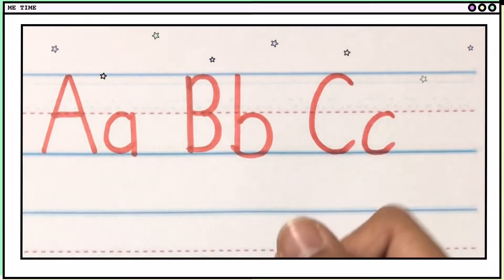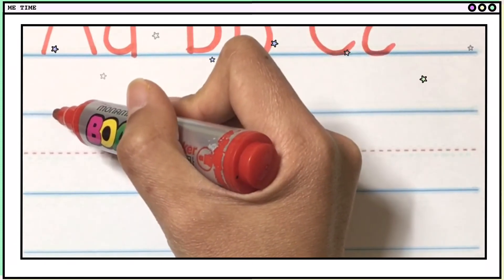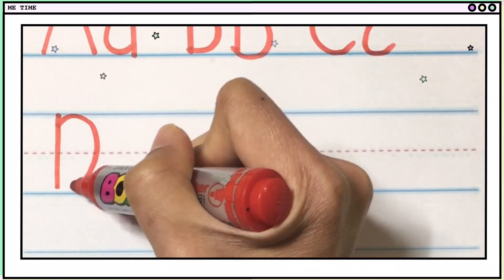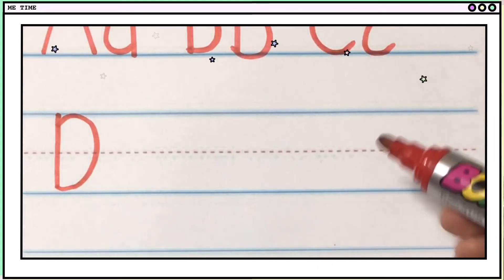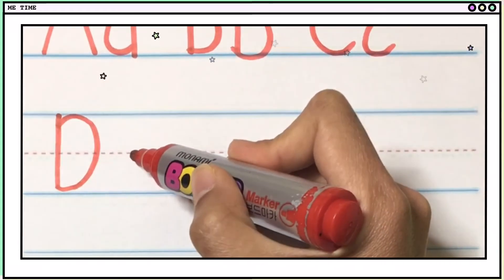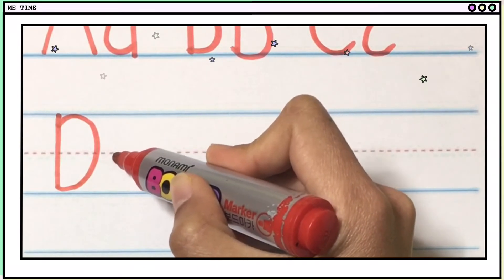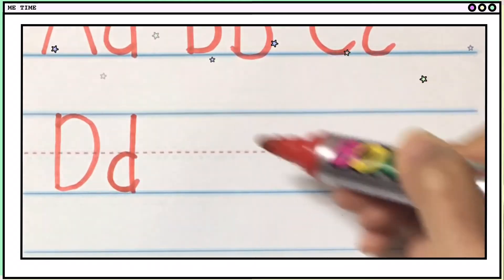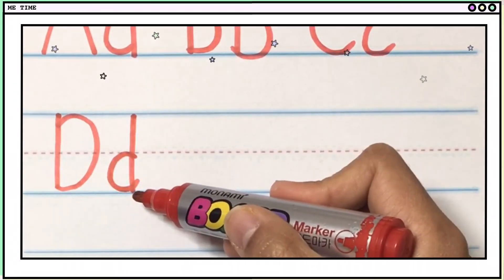Now let's go to D. Okay, this is big D. Get one, two. Okay, that's good. And then, small D is make a small letter C and then one line. Big D, small D.